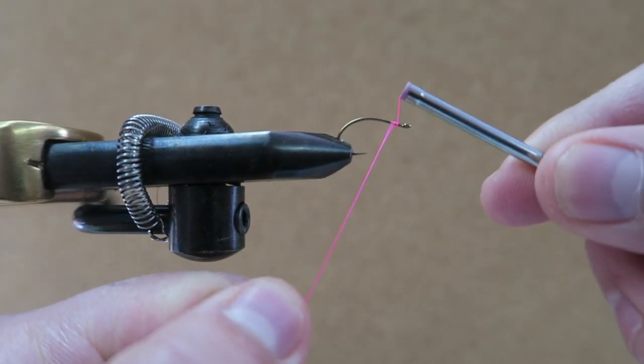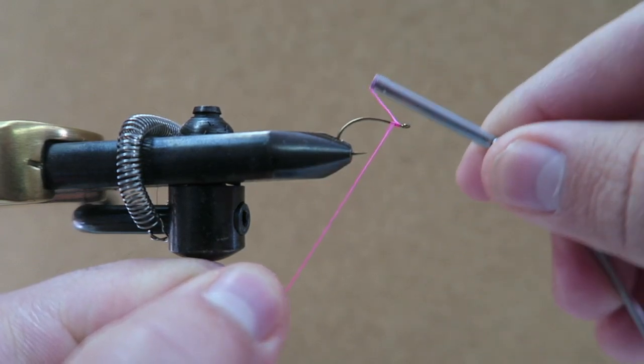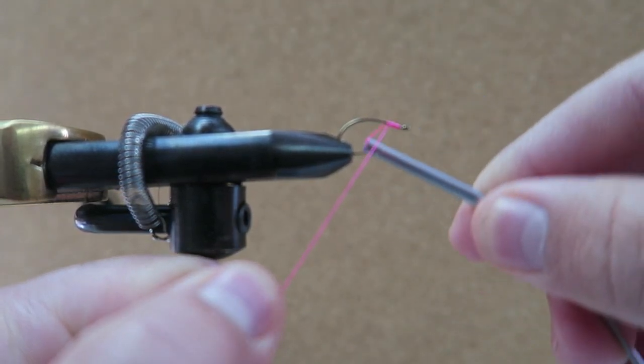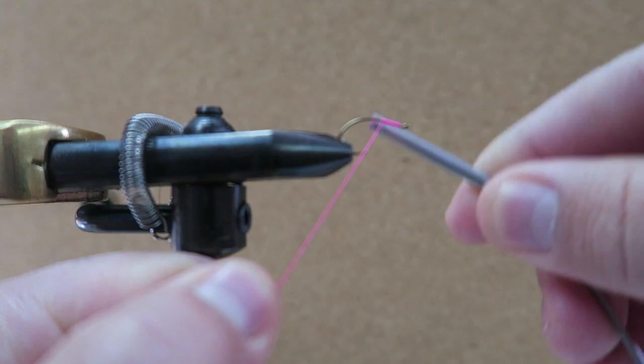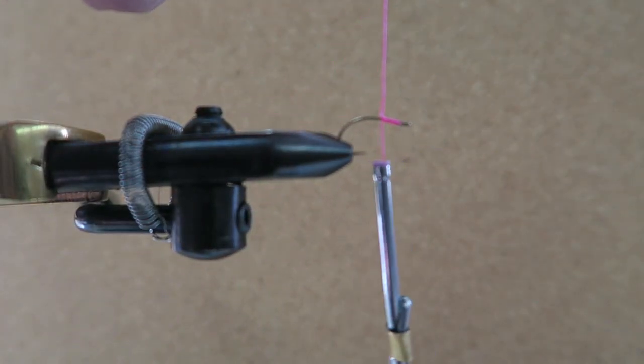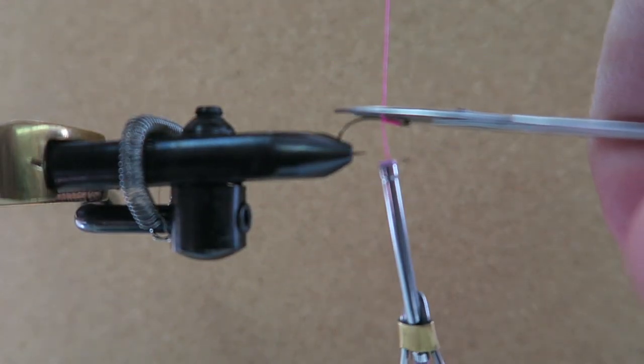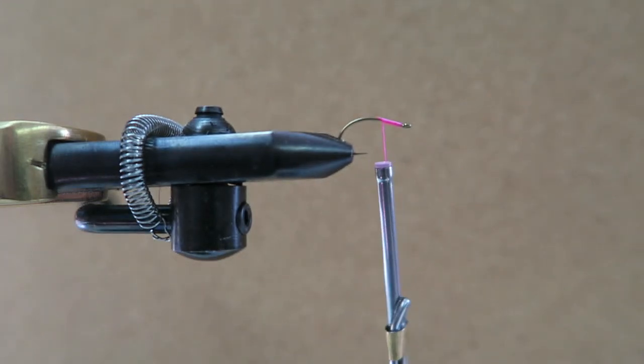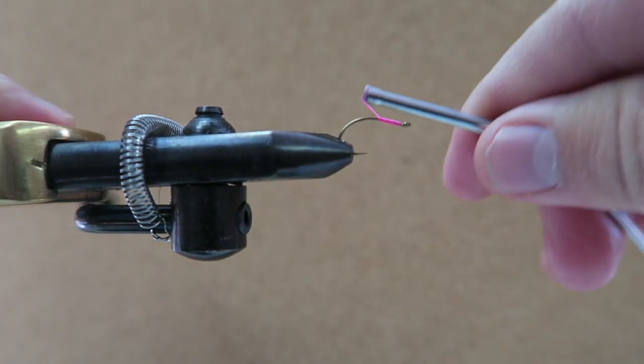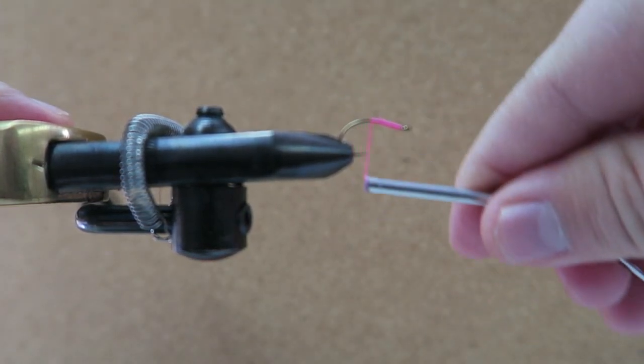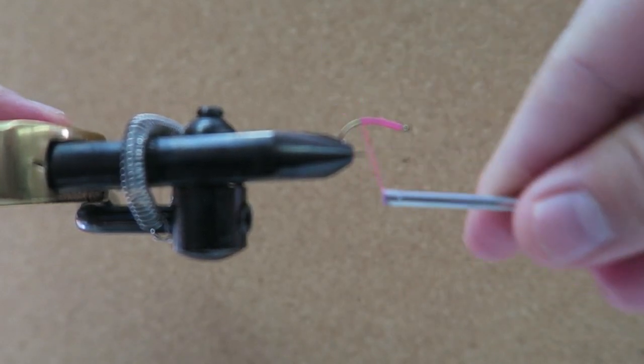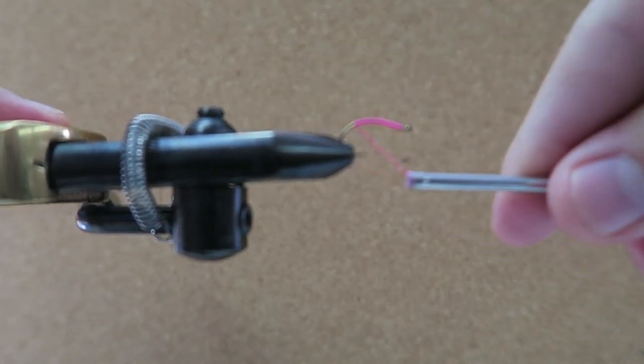Alright so first off you just start your thread. I'm going to be tying a pink colored one, which is a good trout color. Red and tan colors seem to be the more popular colors for this.